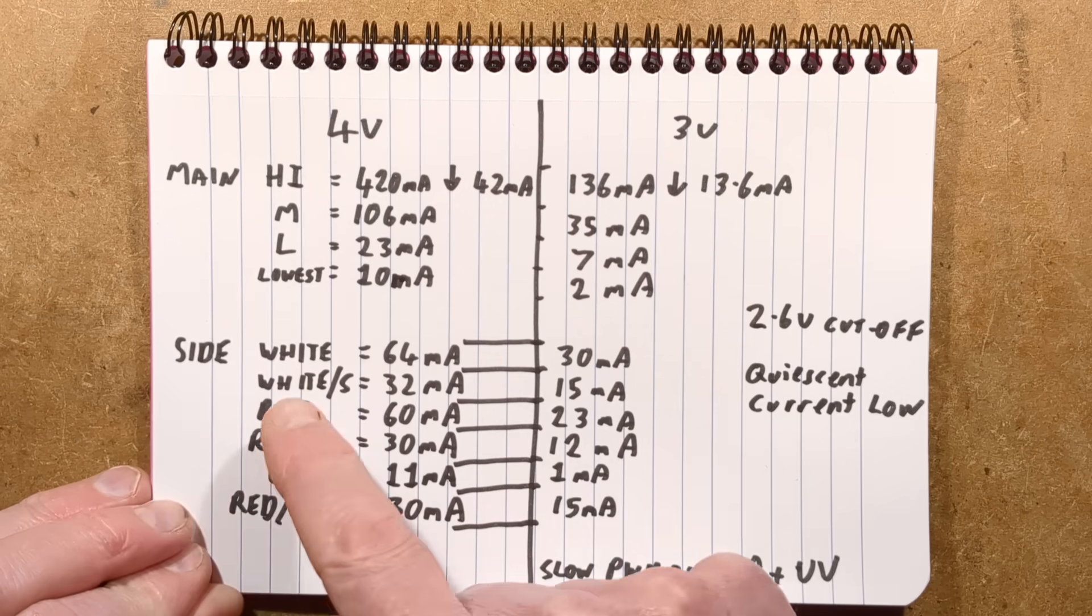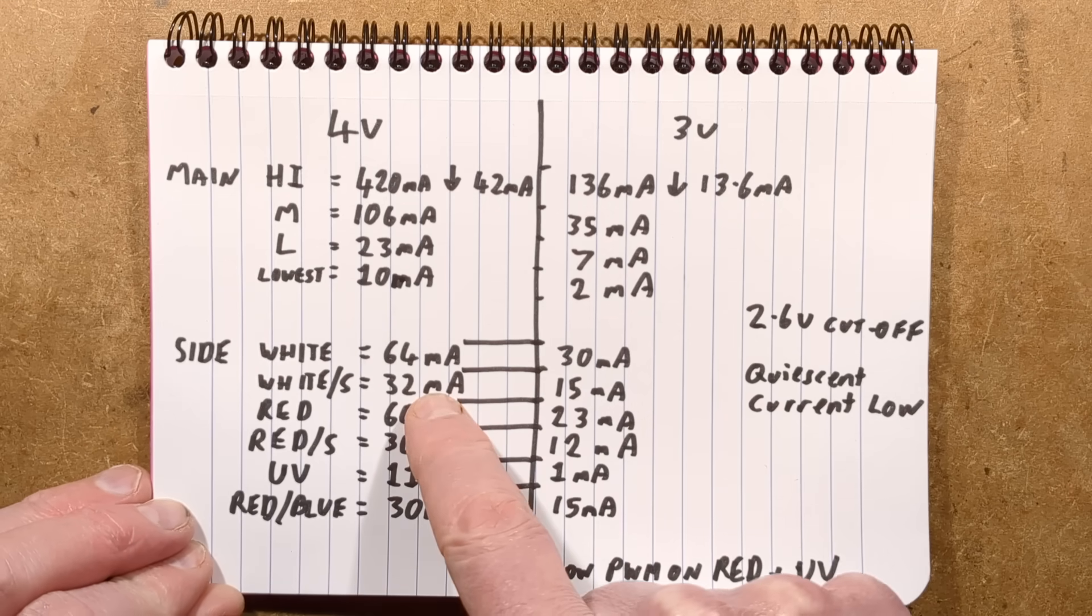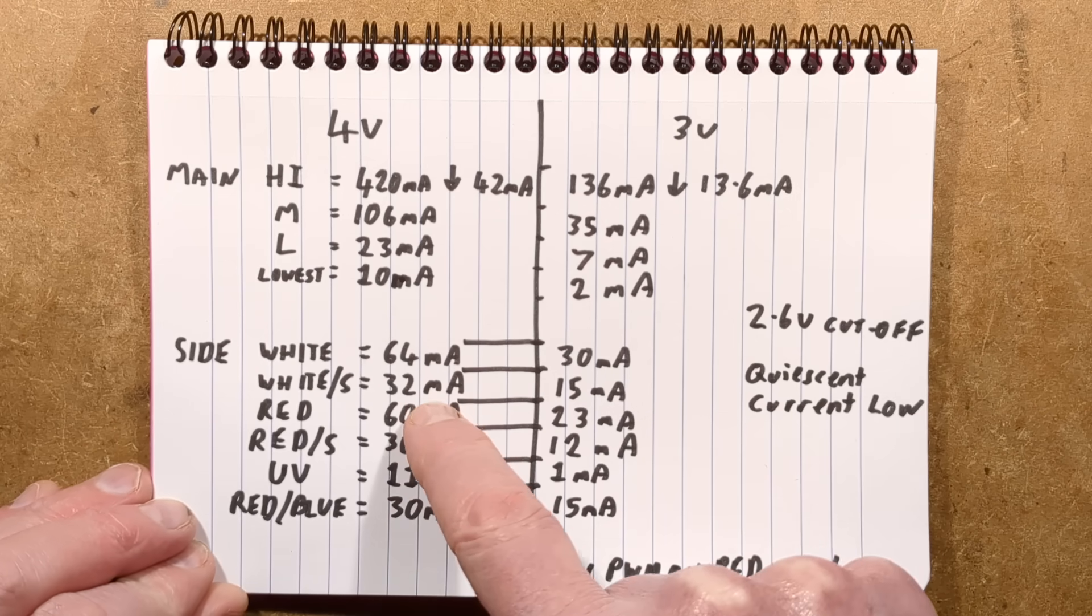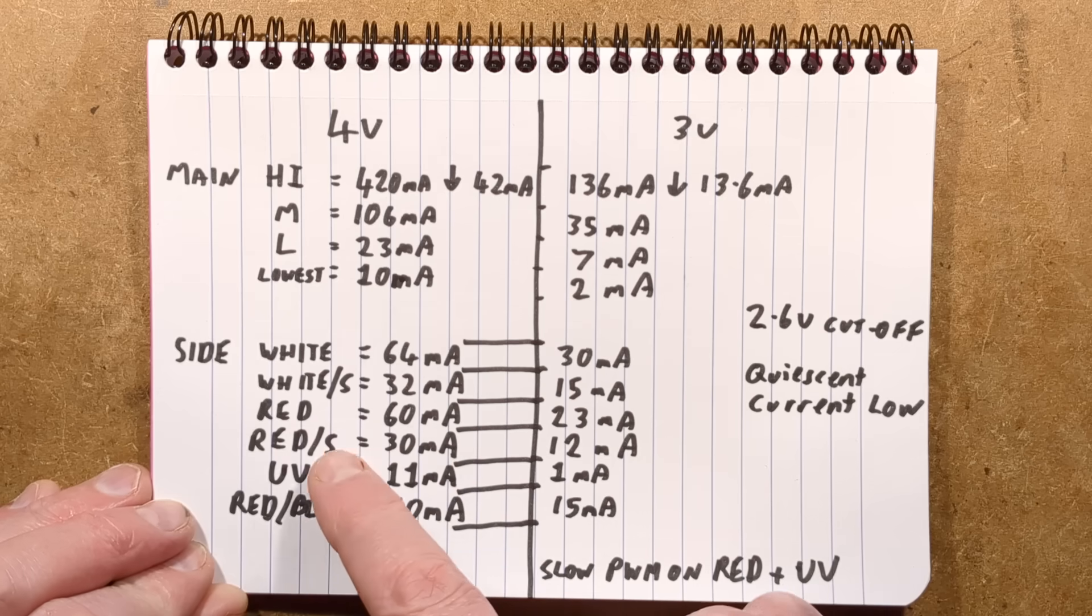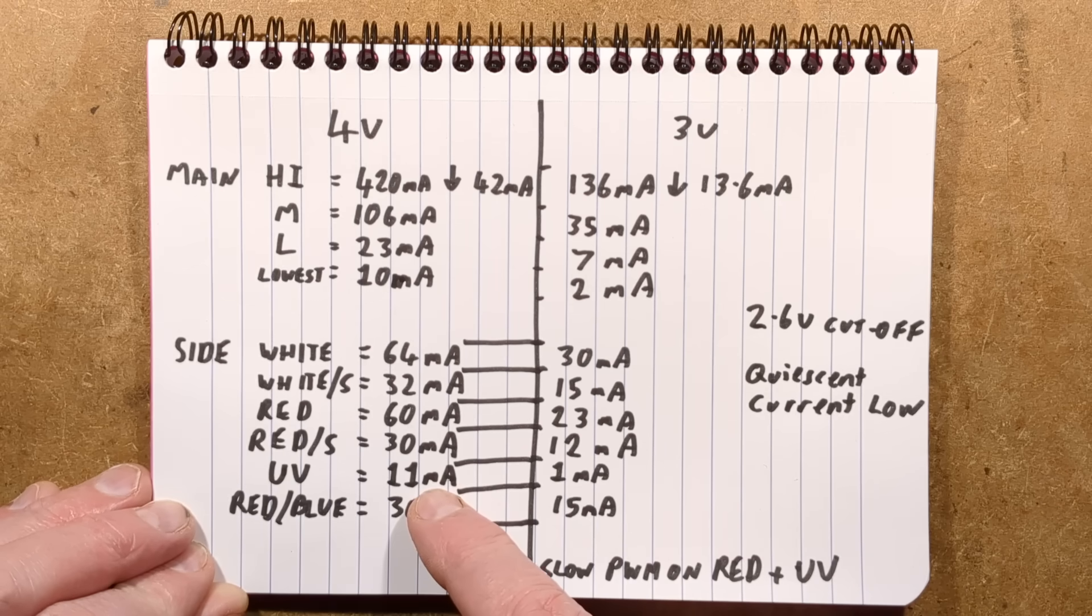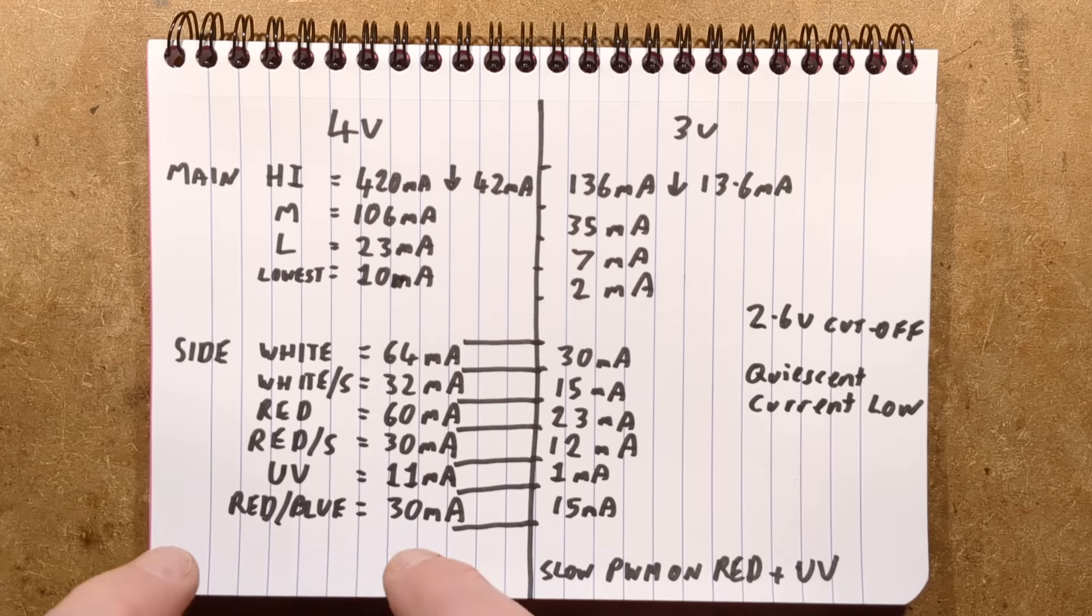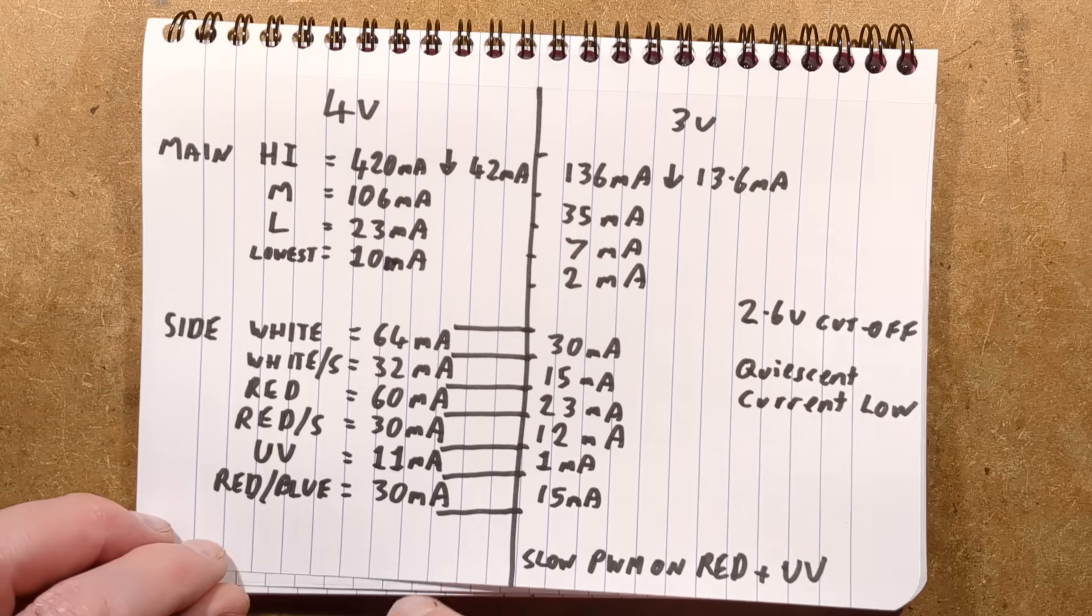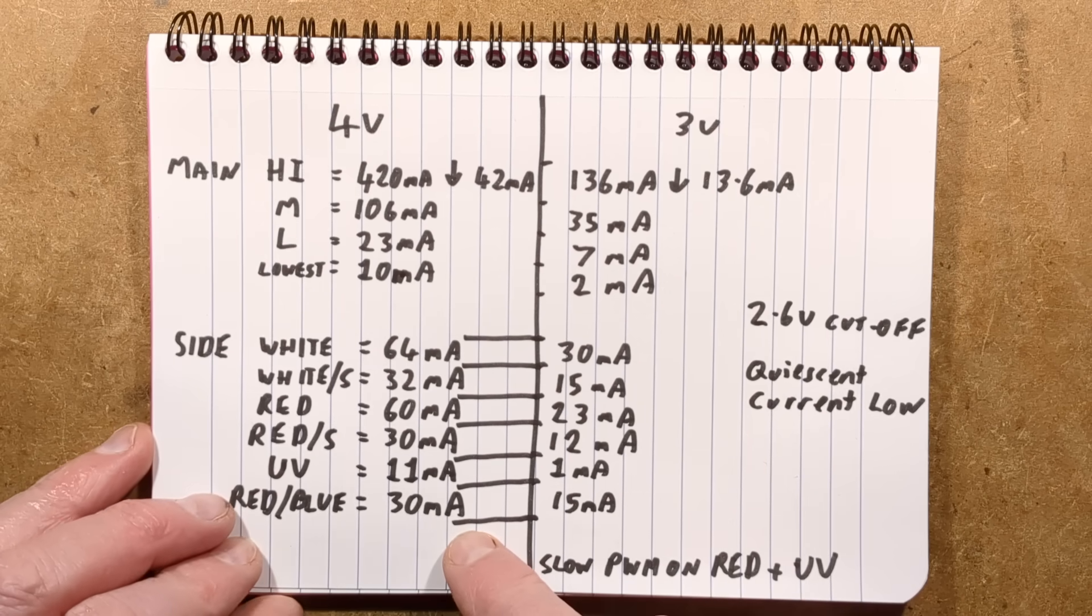The side LEDs: the white was 64 milliamp. When it was strobing, it was a 50-50 mark space ratio, so it was 32 milliamps. Red was 60 milliamp, the red strobing was 30 milliamp. UV was a very low 11 milliamp because it was pulse and modulating. And the red and blue, it goes through loads of different sequences, was averaging out roughly 30 milliamps.